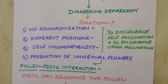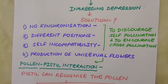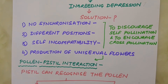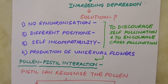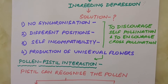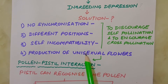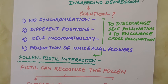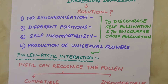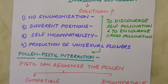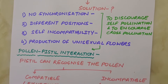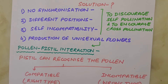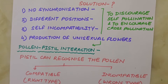The third device to prevent inbreeding depression is self-incompatibility. This is a genetic mechanism that prevents pollen from the same flower or other flowers of the same plant from fertilizing the ovule, by inhibiting pollen germination or pollen tube growth in the pistil. Another device is the production of unisexual flowers. If both male and female flowers are present on the same plant, such as in castor and maize, it prevents autogamy but not geitonogamy. In several species such as papaya, male and female flowers are present on different plants, and this condition prevents both autogamy and geitonogamy.